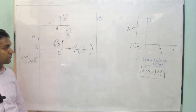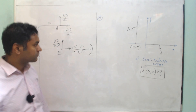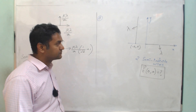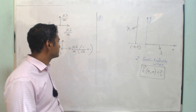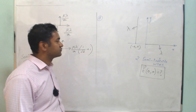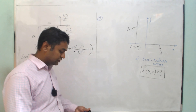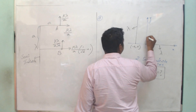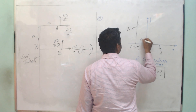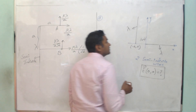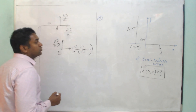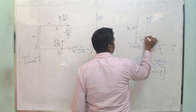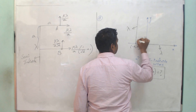The charge per unit length on this wire is lambda. The second wire goes from the origin (0, 0) along the x-axis. We need to find the electric field at the point (0, a) due to both the wires.